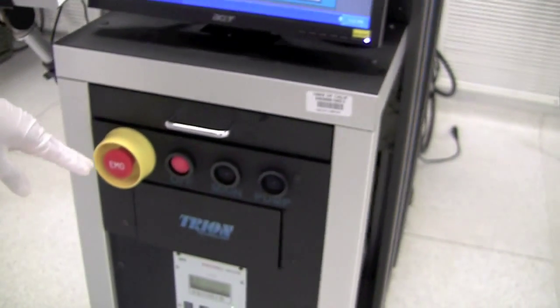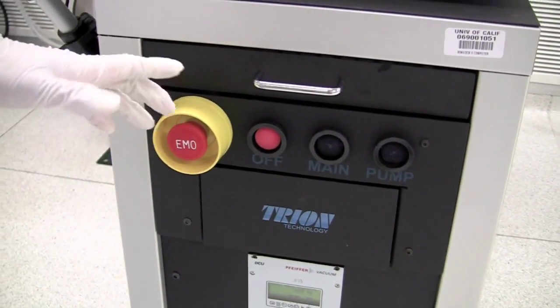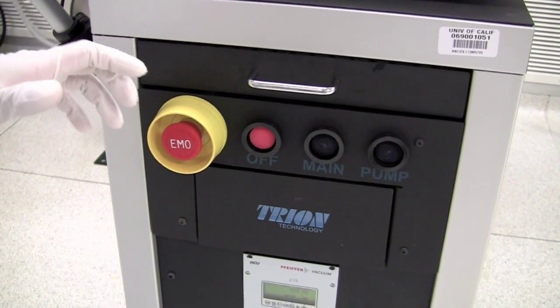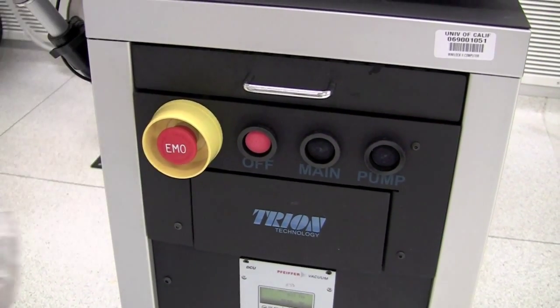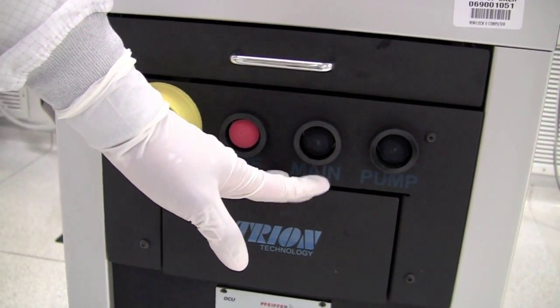Right above it, we have a couple of emergency controls. We have the EMO, which is an emergency shutoff. If you hit this, the tool will shut off. So in the case of a big emergency, a fire or an earthquake, and you have to shut off the tool, hit the button. We also have a red off button and a couple of other tools here that are not really used or intended for regular users.